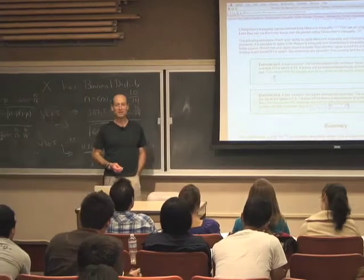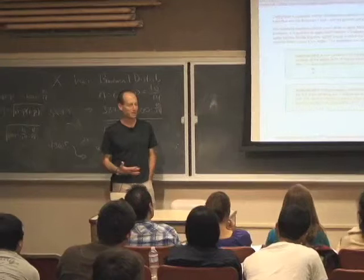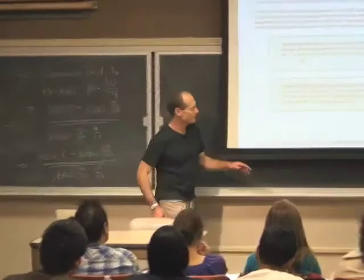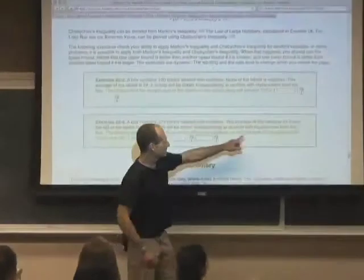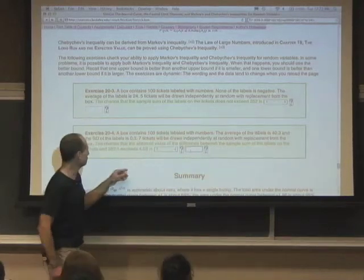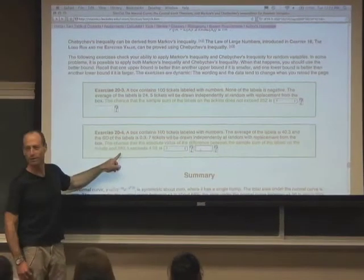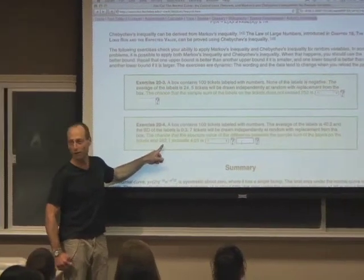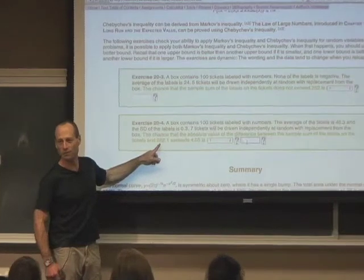What's the expected value of the sample sum of 7 draws from that box? It's going to be 7 times the mean of the box. 7 times 40.3 is 282.1. So this is the expected value of the sample sum of 7 draws.